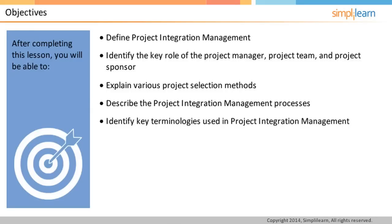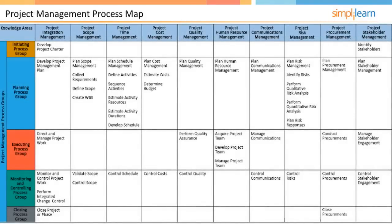There are 47 processes in project management grouped into 10 knowledge areas and mapped to 5 process groups. In this lesson, we will look at the first knowledge area, that is, project integration management and its processes.